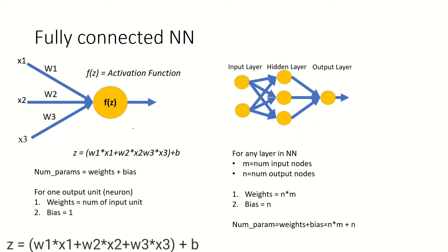Now let's define this for a fully connected neural network. The number of parameters equals weights plus biases. Weights equal the number of input units, because every input is weighted by w, and there is one bias for every node. Now let m be the number of input nodes and n be the number of output nodes.